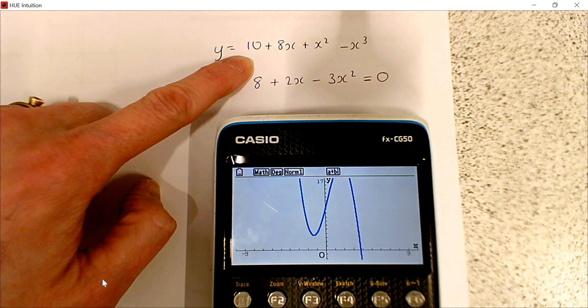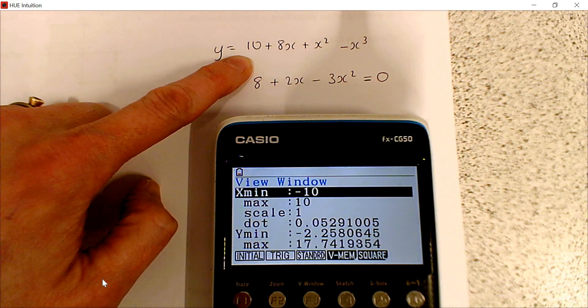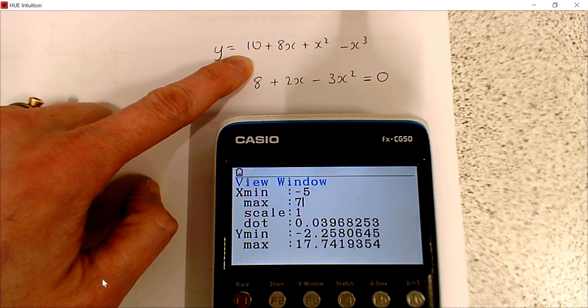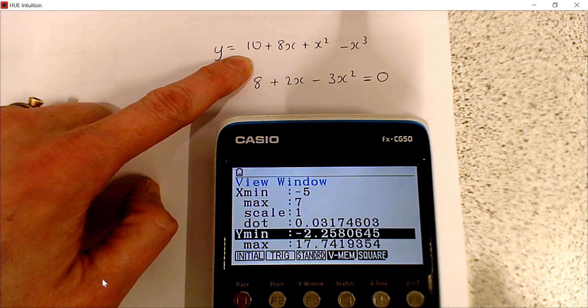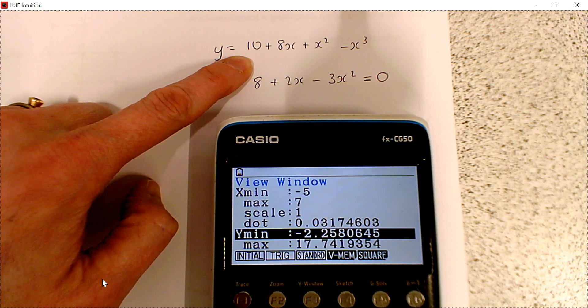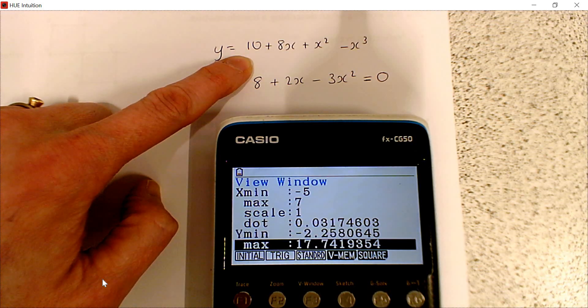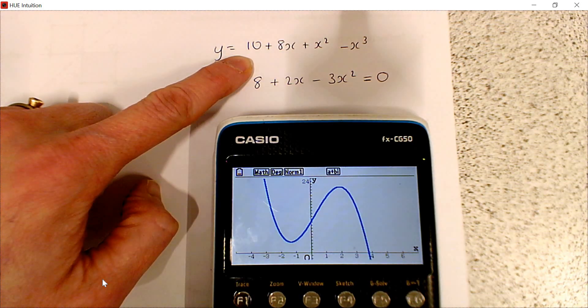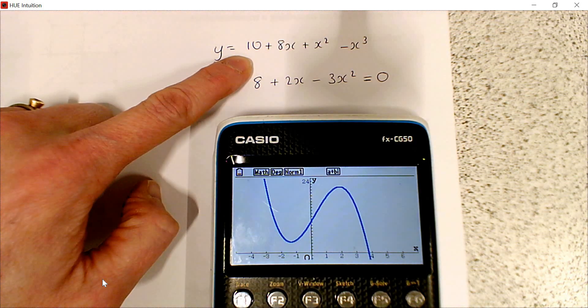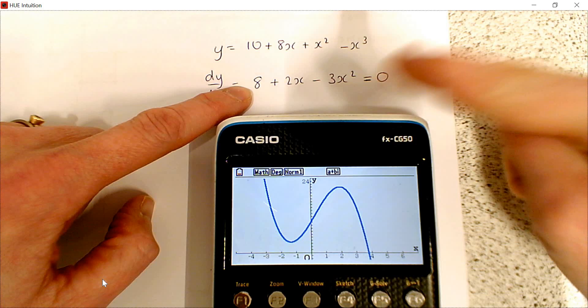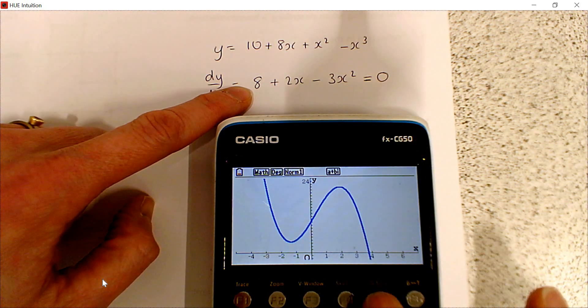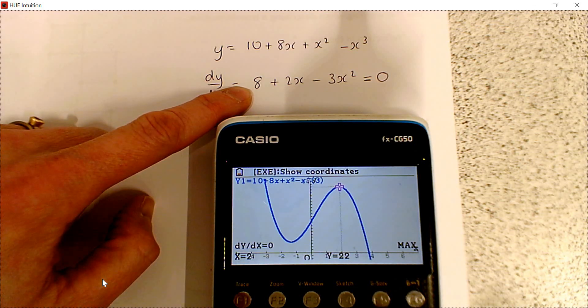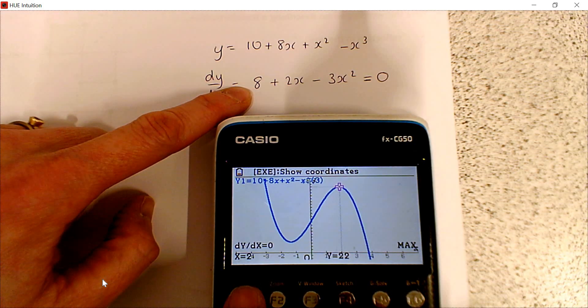View window, I'm going to go from minus 5 to 7 on the x-axis and my y-axis from minus 2 up to 25. That's a bit better. I can see what's going on now. We want to find out where the maximum is happening. So I can do g-solve and then maximum, and that will automatically give me x is 2.